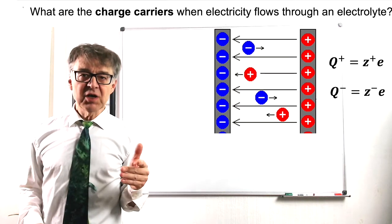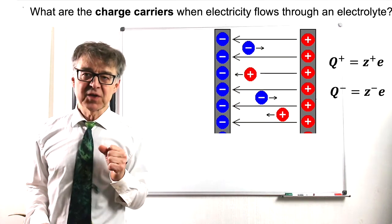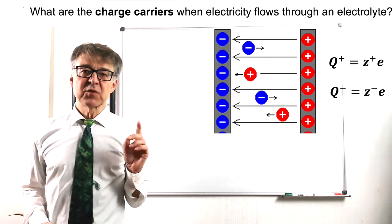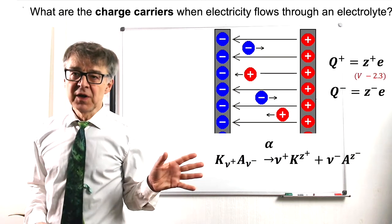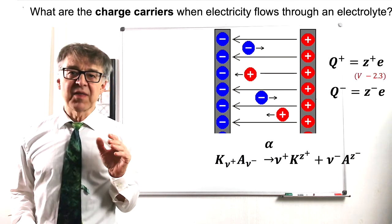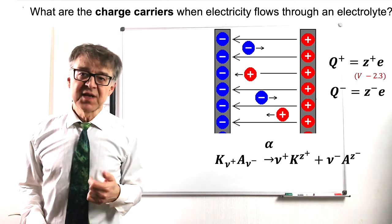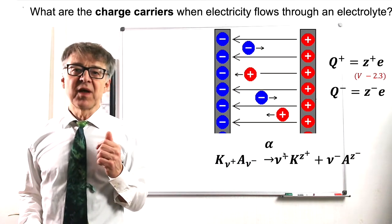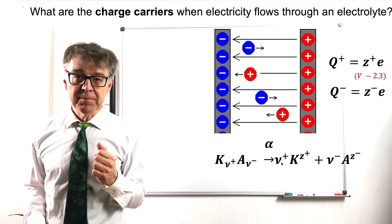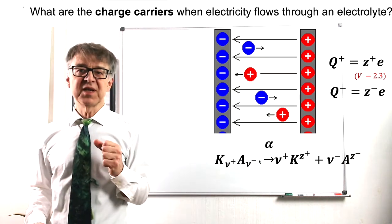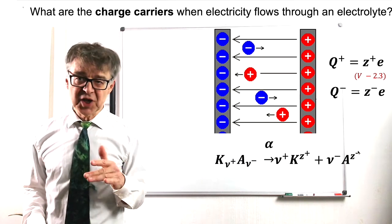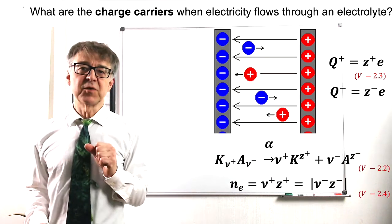The formation of an electrolyte by dissolving a salt in water can be described in this way. Nu plus and nu minus are the stoichiometric numbers. Z plus and Z minus denote the charge of the ions. As there always has to be an equal amount of positive and negative charge, N sub E, this equation must hold.